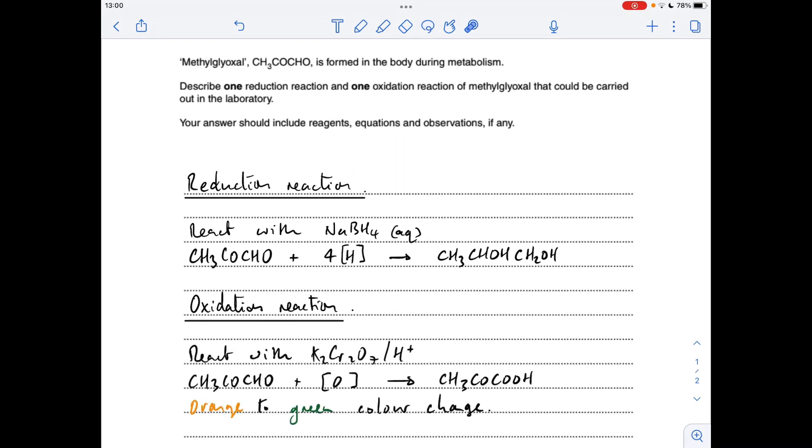Alternatively, you could oxidise it with acidified potassium dichromate 6. Same equation but this time the observation is an orange to green colour change.